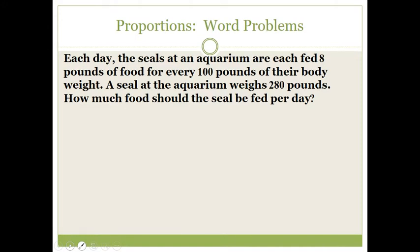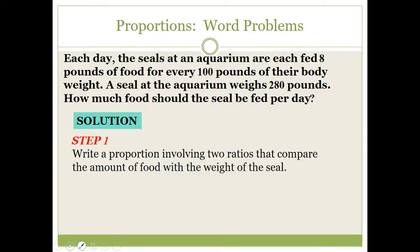Now let's put this to use in real-life problems. Each day the seals at an aquarium are fed eight pounds of food for every one hundred pounds of their body weight. A seal weighs 280 pounds — how much food should it be fed per day? Many real-life problems are solved using proportions, which is why being able to think proportionally is an important idea in mathematics and in real life.